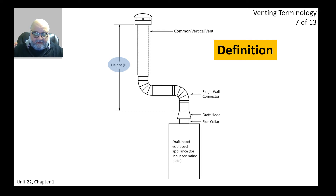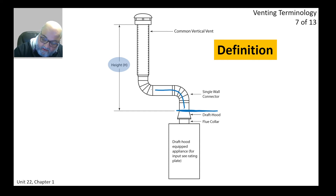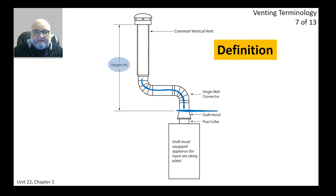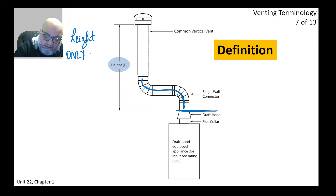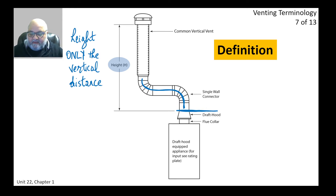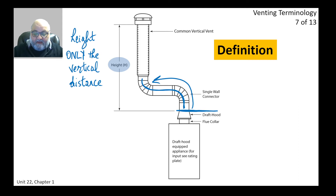The other important definition is stack height. For a single appliance, stack height is straightforward: it starts where the vent connector begins, all the way up to the termination in the atmosphere. H is the total height of the vent run. Remember: when we say height, we mean only the vertical distance — not any horizontal runs.